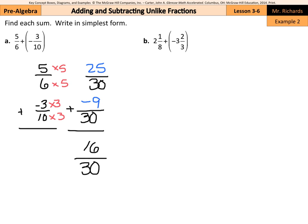And 25 plus negative 9 is equal to a positive 16. Now, we want to write our answer in simplest form, so we're going to take our 16 thirtieths and divide by 2 on the top and the bottom to get 8 fifteenths. I cannot simplify any further, and so 8 fifteenths is my final answer.